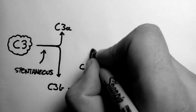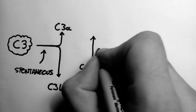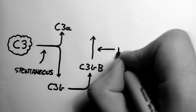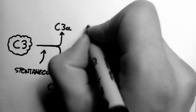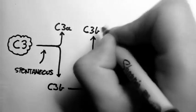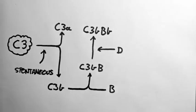Then, in the presence of factor D, which is just a catalyst for this reaction, it produces a protein called C3BB.